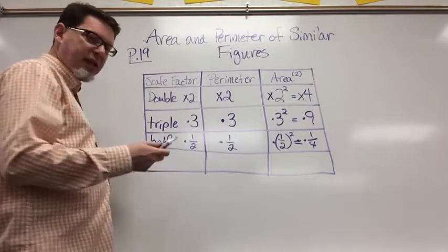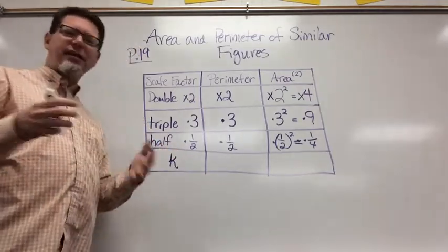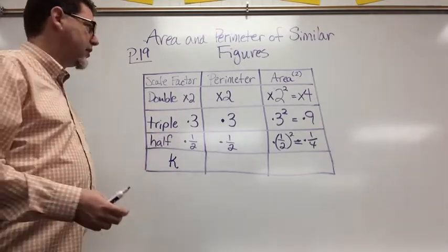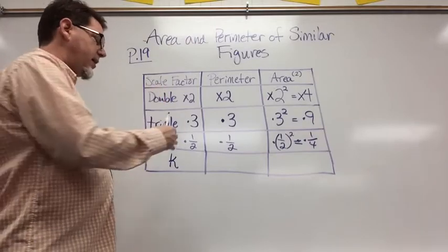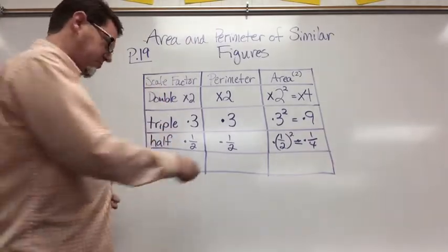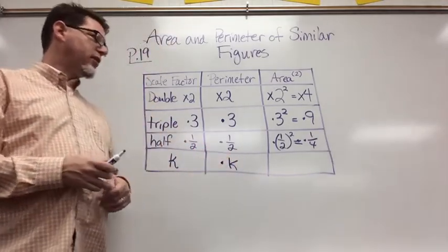Now let's say that our scale factor is K because that's how mathematically we symbolize the scale factor. So what's going to happen to my perimeter if my scale factor is K? I'm just going to multiply by K.